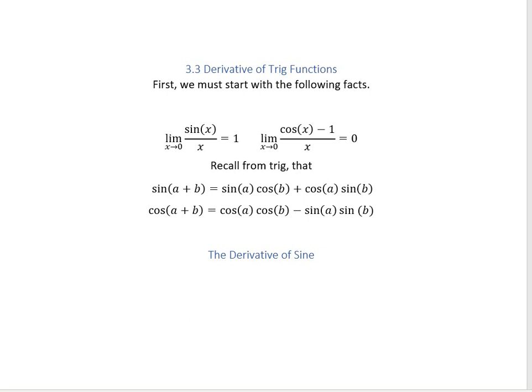In section 3.3, we're going to start looking at the derivative of trig functions. We have to start with these two big facts, which are also going to be used at the end of the section to investigate limits. These two facts are: the limit of sine of x over x as x approaches 0 equals 1, and the limit of cosine of x minus 1 over x as x approaches 0 is 0.